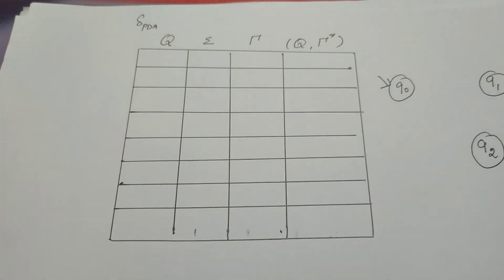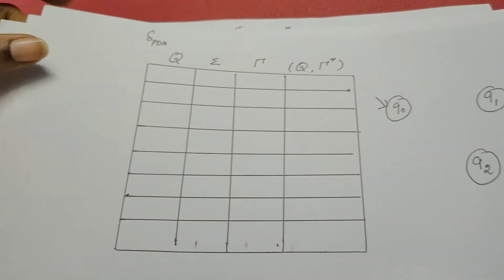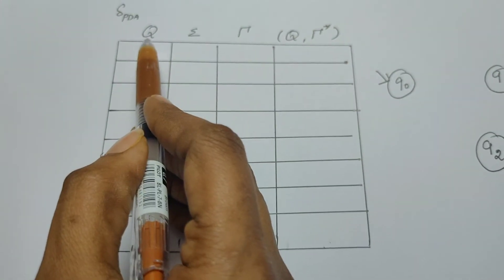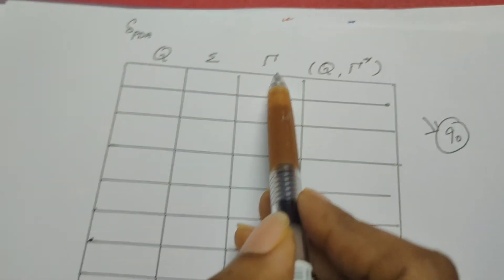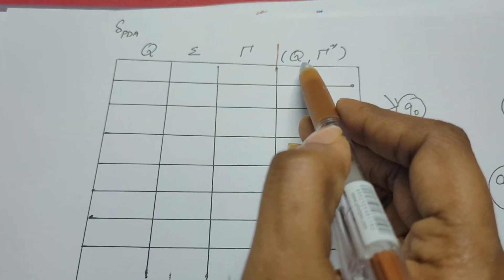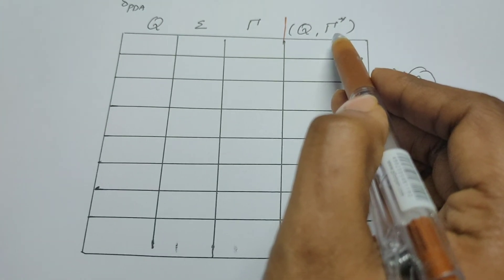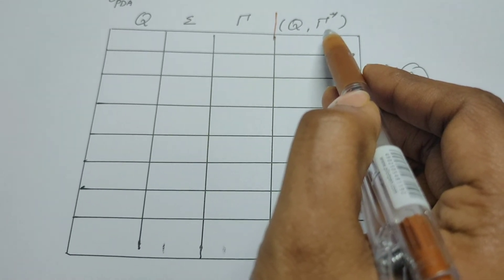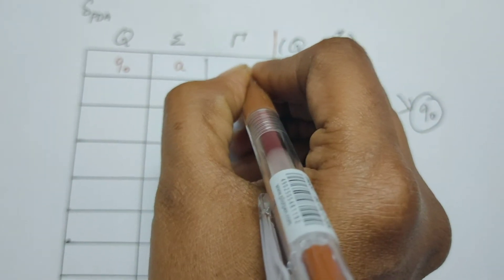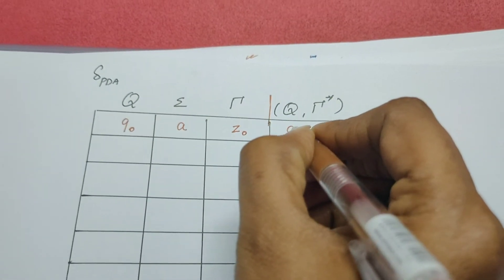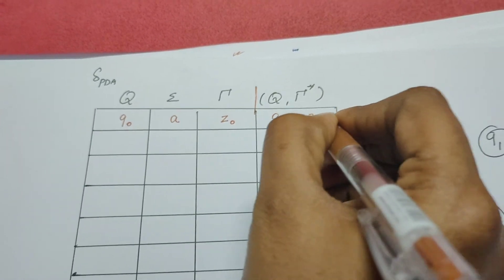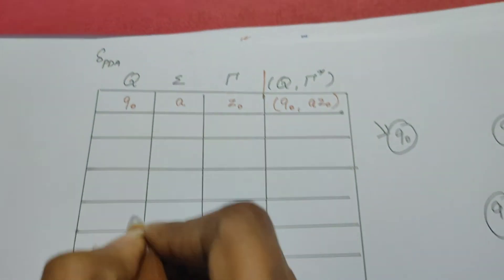I have already created the transition table. The first column is the current state of the PDA, the second column is the input symbol read from the input tape, the third column indicates what is available at the top of the stack, and the last column indicates the change of state and the symbol to be pushed or popped. The initial state is q0. When it reads the first a and the stack is empty, it stays in q0 and pushes a onto the top of the stack. This is the very first transition rule.